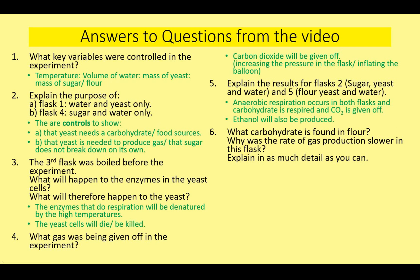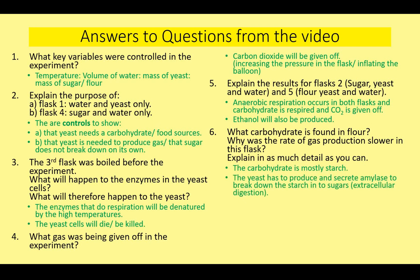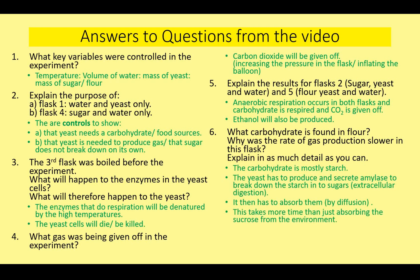The carbohydrate in flour is mostly starch, which is a large molecule that can't be directly used. The yeast must first break it down using amylase by extracellular digestion, then absorb the resulting sugars by diffusion into the cells before it can respire them. This takes more time than directly absorbing sucrose already in the environment, which is why the rate of gas production is slower in the flour flask. This is also essentially what happens when making bread.